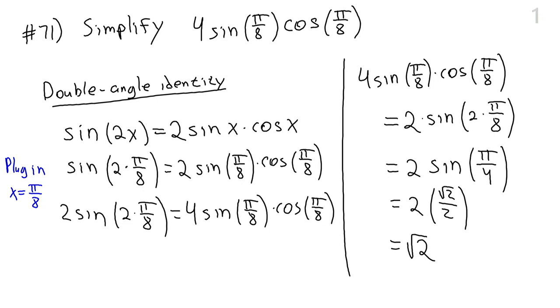The final simplified answer is radical two. This is already fully simplified, since sine of 45 degrees is radical two over two, and multiplying by two gives radical two.